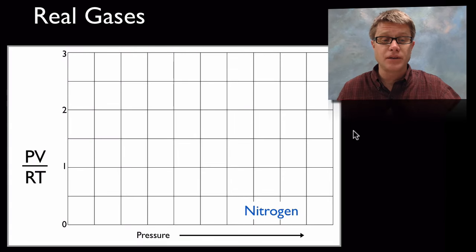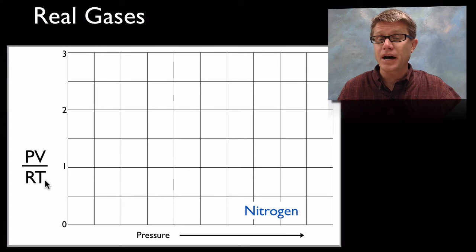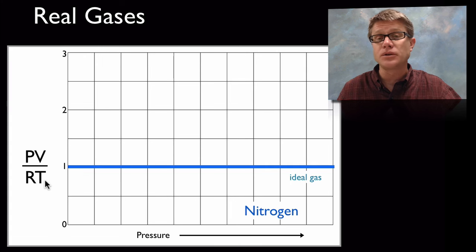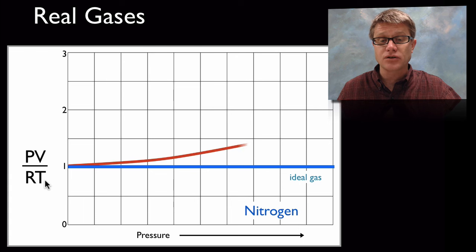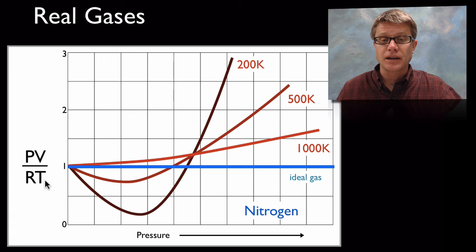If we actually graph PV over RT for an ideal gas, it will always be 1. But if we vary the temperature for a real gas, let's try nitrogen: at 1000 Kelvin it would look like that, 500 it would look like that, and 200 it would look like that.